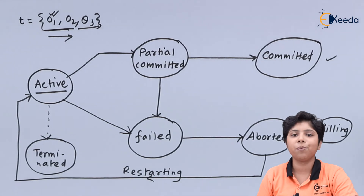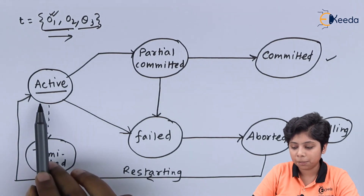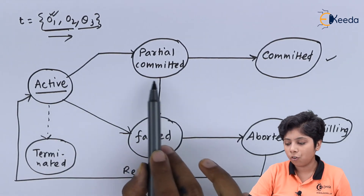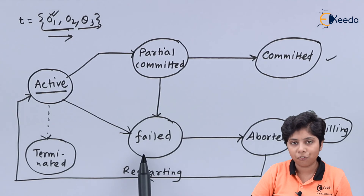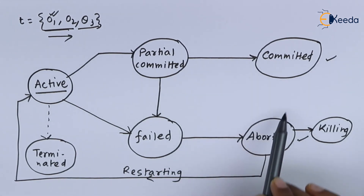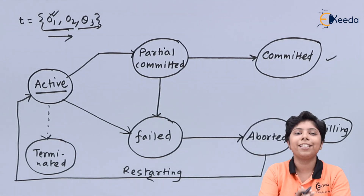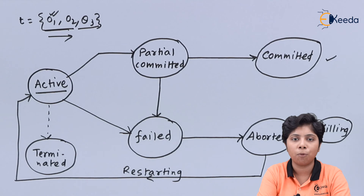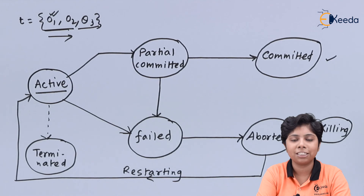In summary, the transaction starts in the active state, then moves to partially committed, from which it can go to committed or failed state. Finally it moves to the aborted state by killing or restarting, or in a special case it can go to the terminated state if not committed or aborted. In this way we can ensure atomicity and durability for each operation in a transaction. Thank you for watching this video, stay tuned with Ikira and subscribe.